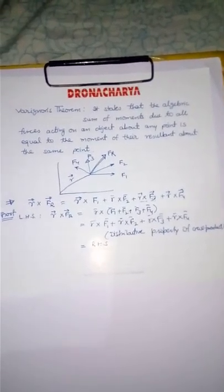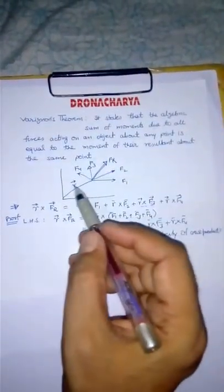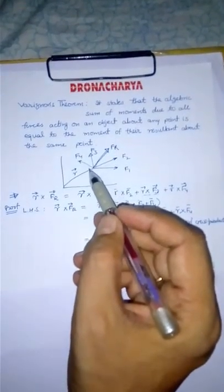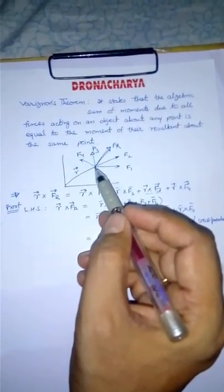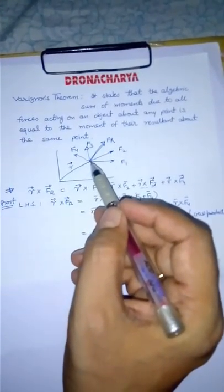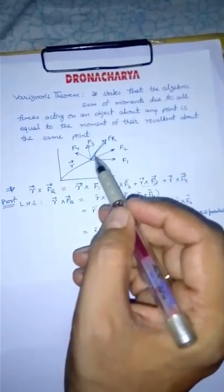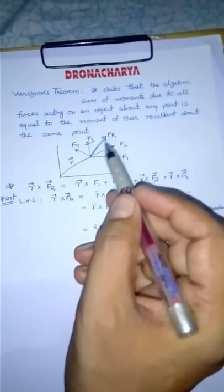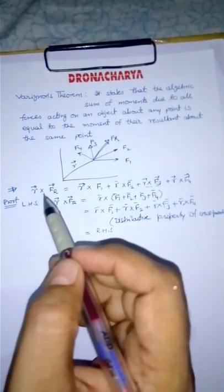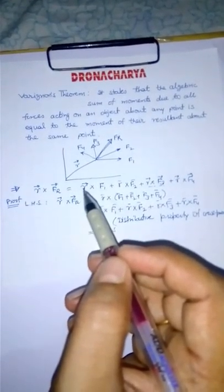That is, if forces f1, f2, f3, f4 are acting at this point, and this is at our location vector r from origin, we can say that if the resultant of these all four is fr, then moment of resultant is r cross fr.